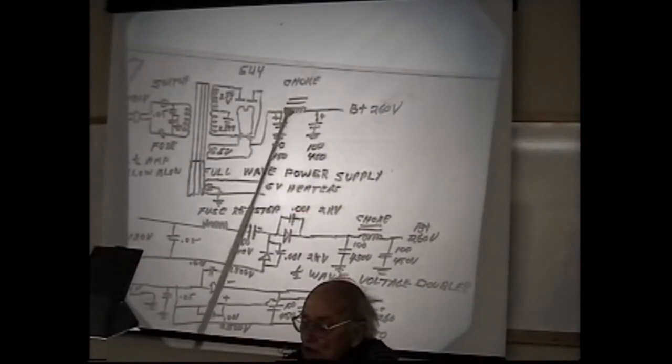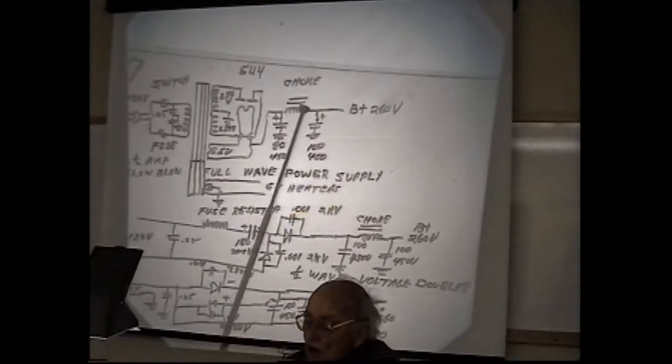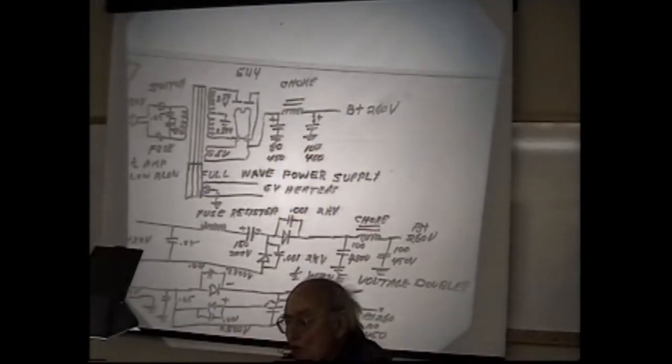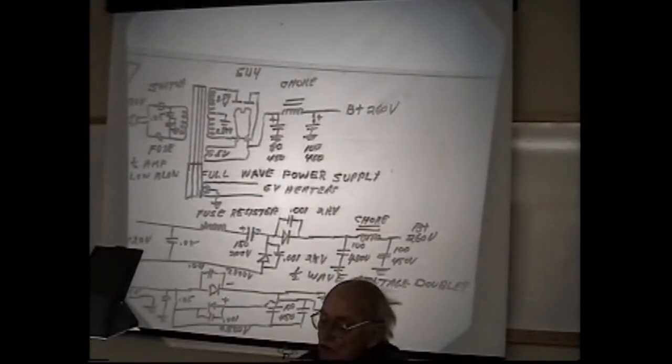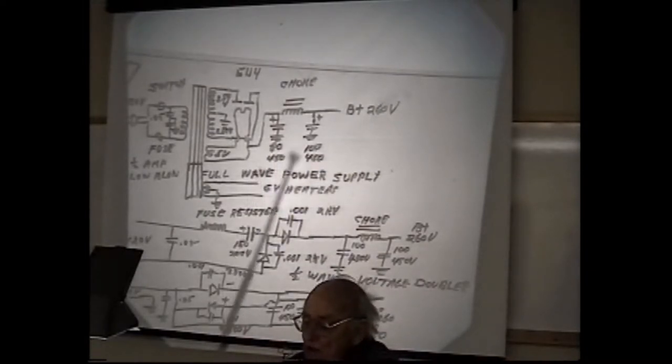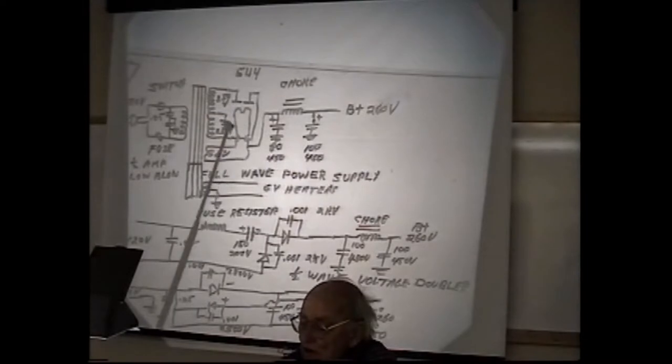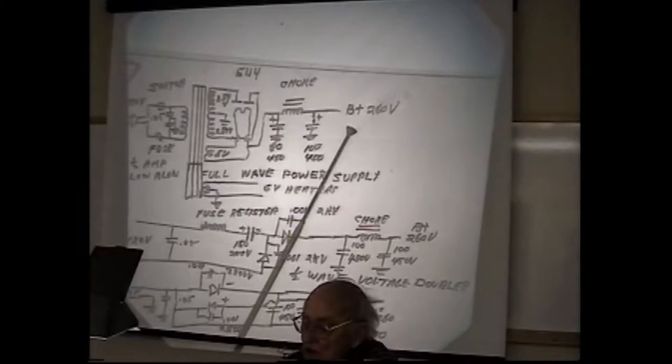And we have a choke coil which is about two and a half, three inches long. Over here has a resistance of about 100 ohms. It doesn't drop the voltage very much but it's necessary for it to be there to take the hum out otherwise you'll get some hum bars in the picture. So you've got to have that choke. And this gives you about, depending on the transformer, but most of them put out about 260 volts DC.